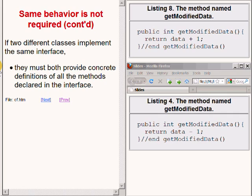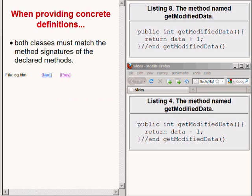As we have stated before, if two different classes implement the same interface, they must both provide concrete definitions of all the methods that are declared in the interface, or the classes themselves must be declared abstract. When each class provides a concrete definition, it must match the method signatures of the declared methods. Therefore, both classes must provide concrete definitions of the interface methods with the same method signatures.